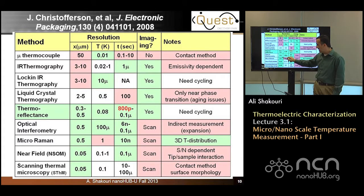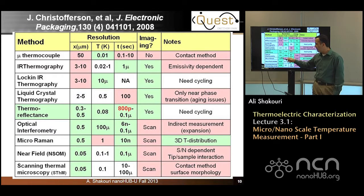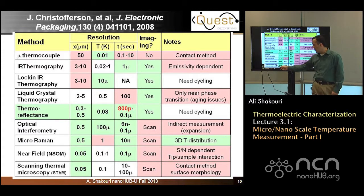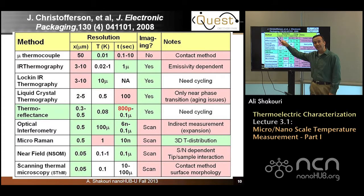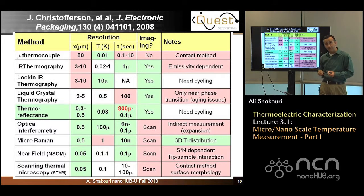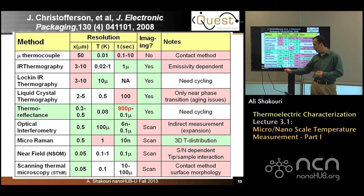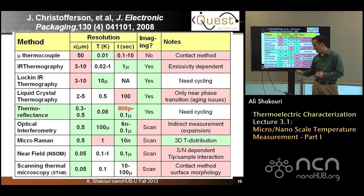There are also other techniques including interferometry and micro-Raman near-field. A technique that has been popular in the last 20 years is scanning thermal microscopy — basically putting a tiny thermocouple at the tip of an atomic force microscope. Spatial resolution can be down to 50 nanometers. Temperature resolution is not as good, but this is one of the ways to get the highest spatial resolution, and we have a special lecture on this technique.